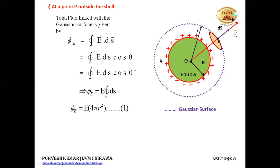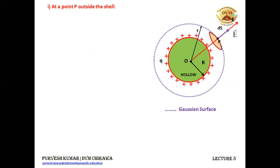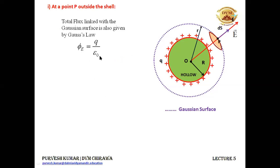This gives equation 1: the flux linked with the Gaussian surface equals E multiplied by 4 pi small r squared. Now we find the electric flux using Gauss's law: phi equals Q upon epsilon naught. The total charge Q is all the charge present on the hollow spherical shell, which is enclosed by the Gaussian surface.